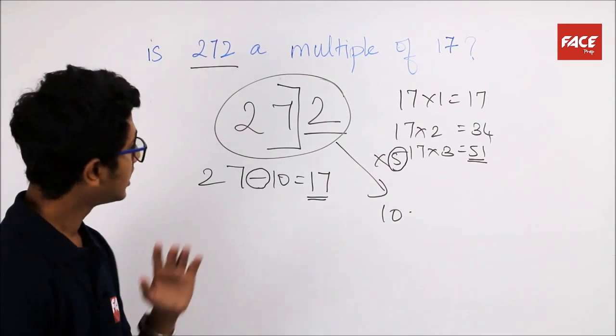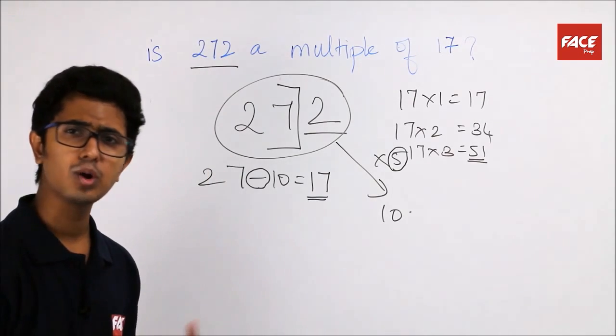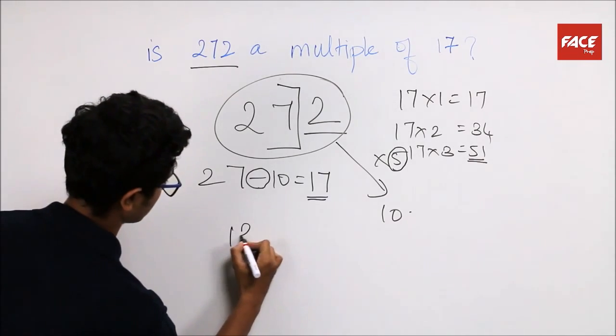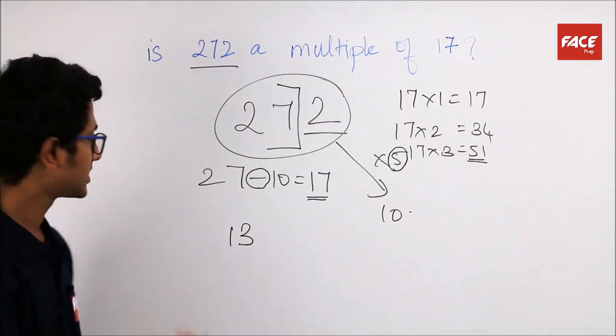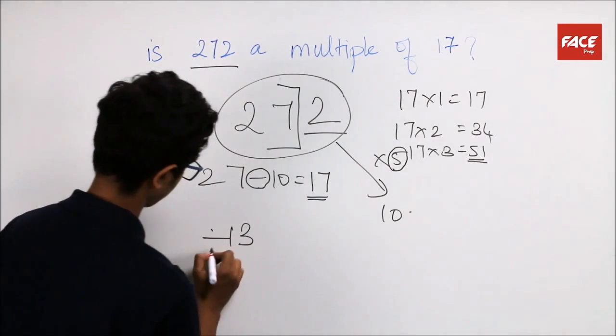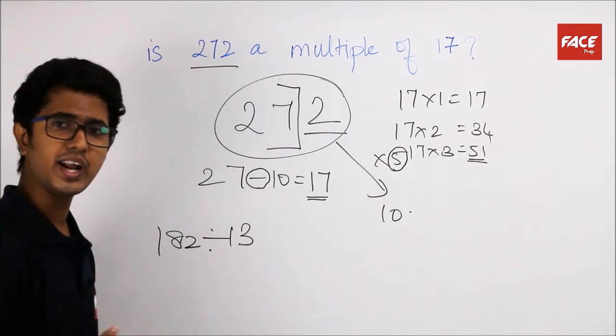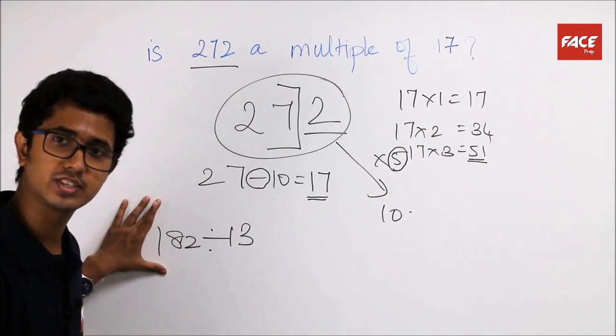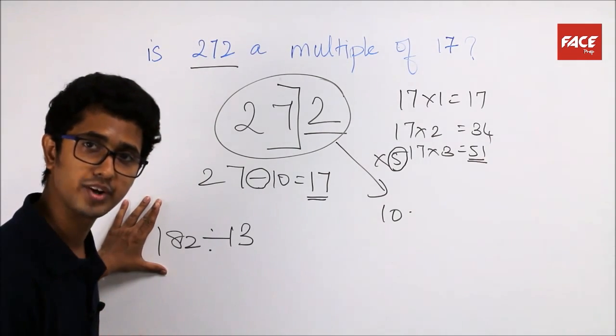For 17, it works. What about other prime numbers? Let's take 13 for now. Let's take any number. Say, 182. 182 divided by 13. Is it a multiple or not? We know 182 is definitely a multiple of 13. So, how will you do it?